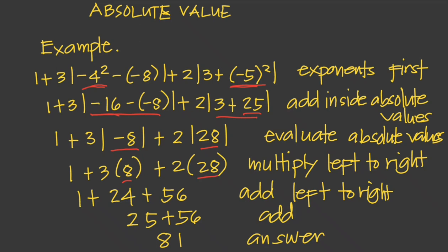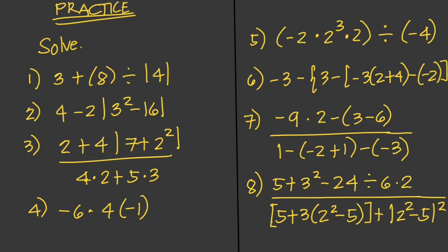Then multiply from left to right: three times eight equals 24, and two times 28 equals 56. Adding from left to right, 25 plus 56 gives a final answer of 81. That's it for today — I hope you understood everything in this video. There are some practice problems for you to work on; try solving them and write your answers in the comment section. Please like and subscribe, and have a great day.